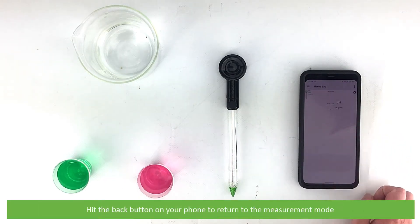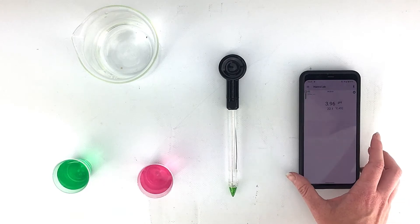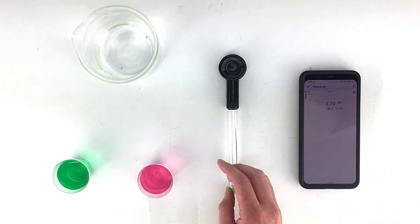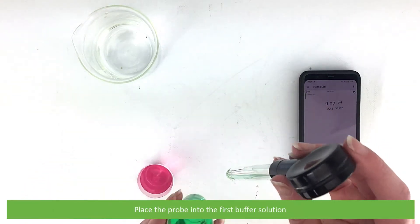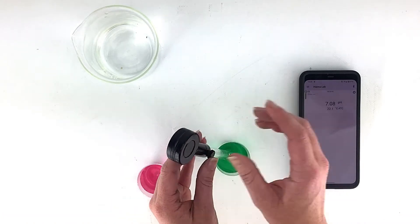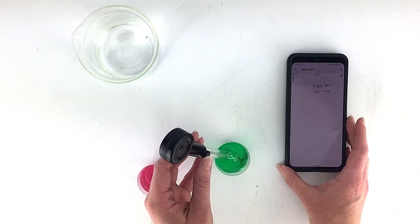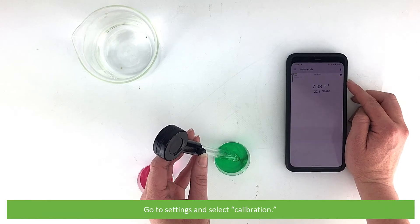Press the back button on your phone to return to measurement mode. Place the probe into the first buffer solution. Go to settings and select calibration.